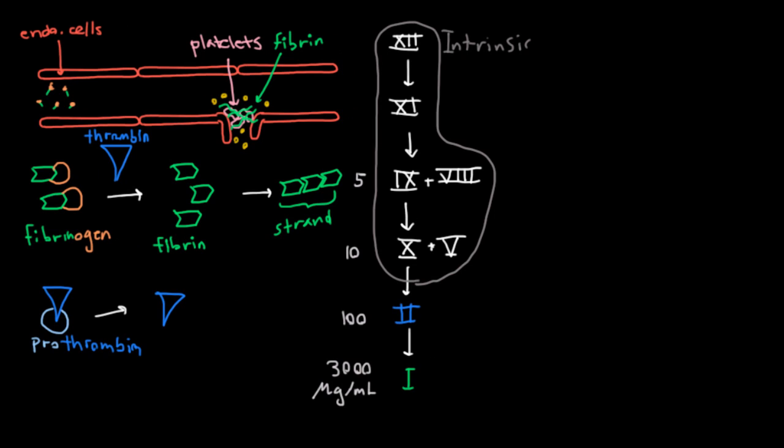But anyway, I said that this was the intrinsic pathway because there is another pathway, which also leads to an activated 10. But in this other pathway, what activates the 10 is an activated 7, which is activated by 3, also known as tissue factor. And I'll just write TF for tissue factor. And this pathway, which I'll circle here, and I apologize for the poor organization, this one is known as the extrinsic pathway.